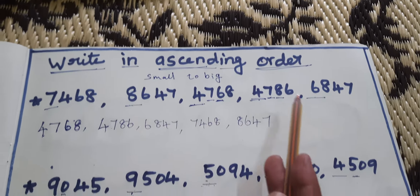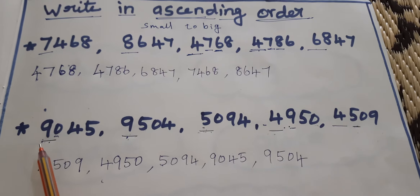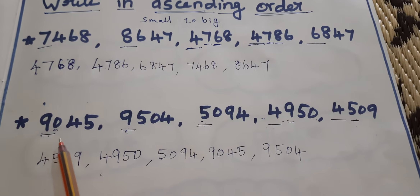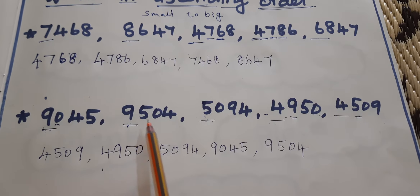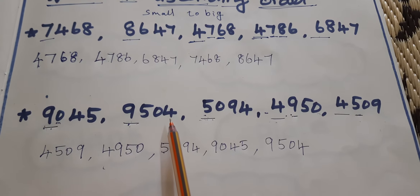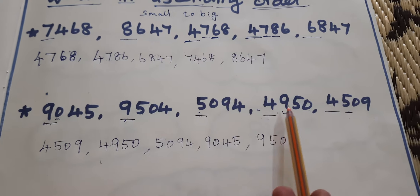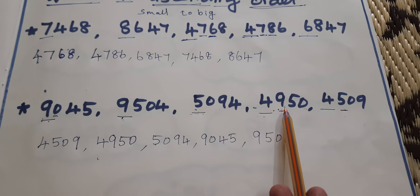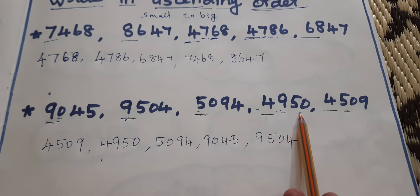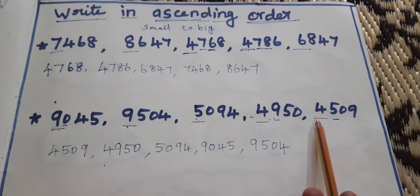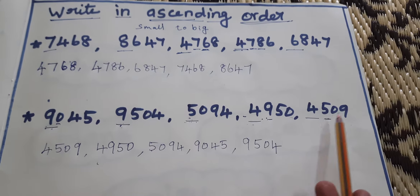Ascending order. Then, one more example. The numbers are: 9045, 9504, 5094, 4950, 950, 4509.